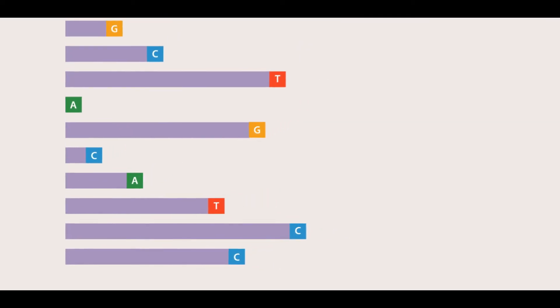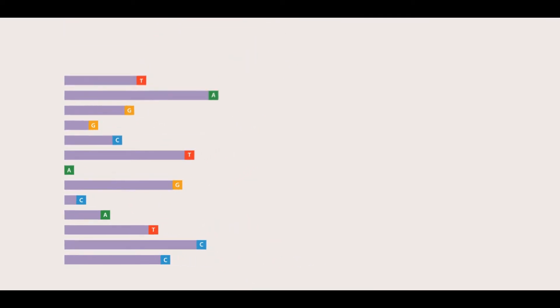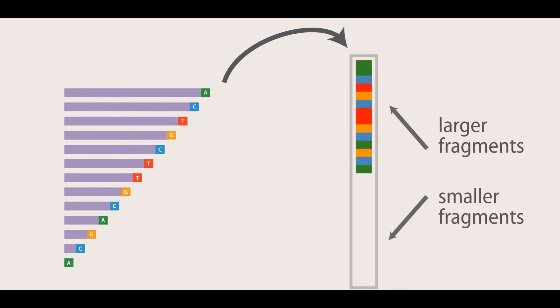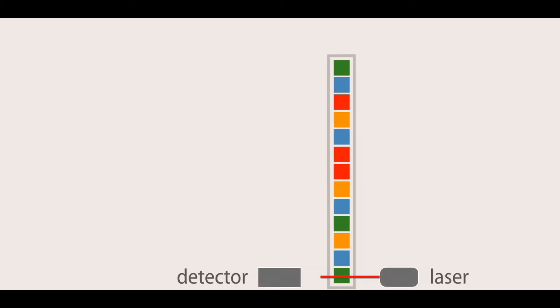The reaction mixtures are loaded on the sequencing machine, either manually onto slab gels or automatically with capillaries, and are electrophoresed to separate the DNA molecules by size. The DNA sequence is read through the fluorescent emission of the dideoxynucleotide as it flows through the gel.